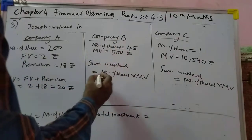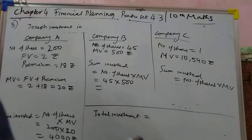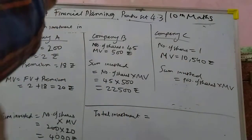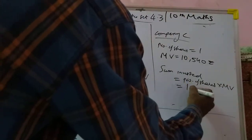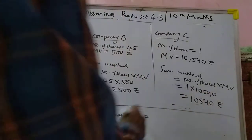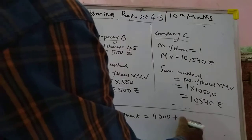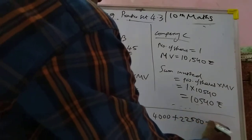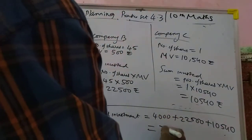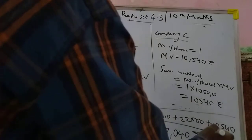For the second part, market value is given directly, so it becomes 45 into 500. Adding both values together, you get 37,040 rupees as the final answer.